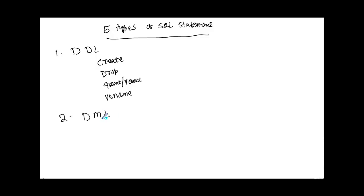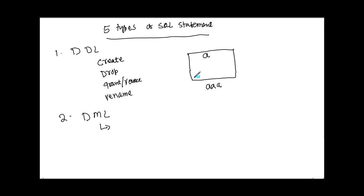The next type is DML, or Data Manipulation Language. In DDL we create a structure — essentially a container. In our case the container is table 'a' with one column called 'a'. In DML, we populate that container. We can INSERT data into the table, DELETE existing data from the table, and also modify existing data.